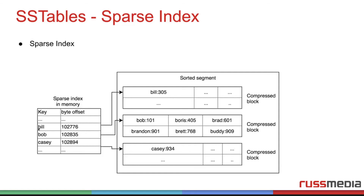We just look — for example, we pick our user Boris, we want to get Boris. Now we check our memory: Bill — Boris is a bit higher. Bob — Boris is still higher. Then comes Cassie. And then we find out Boris is somewhere between Bob and Cassie. So we only scan this one block or segment. So we save some processing time; we need to scan this part every time we have to make a select.